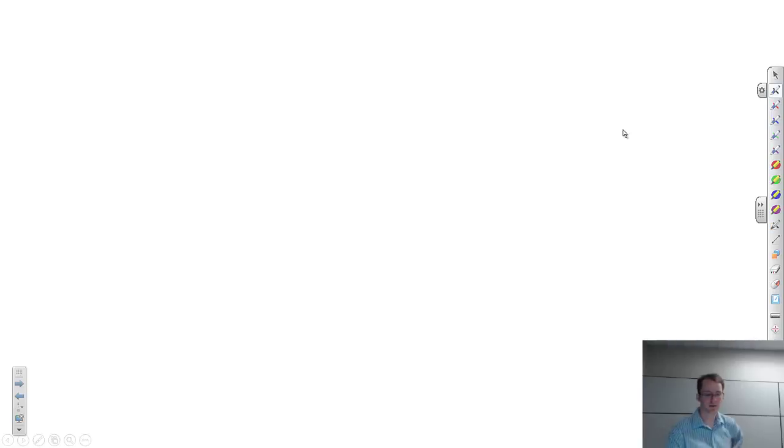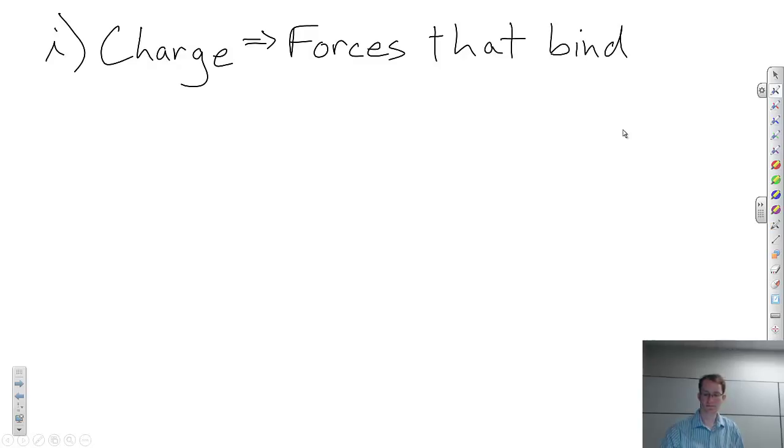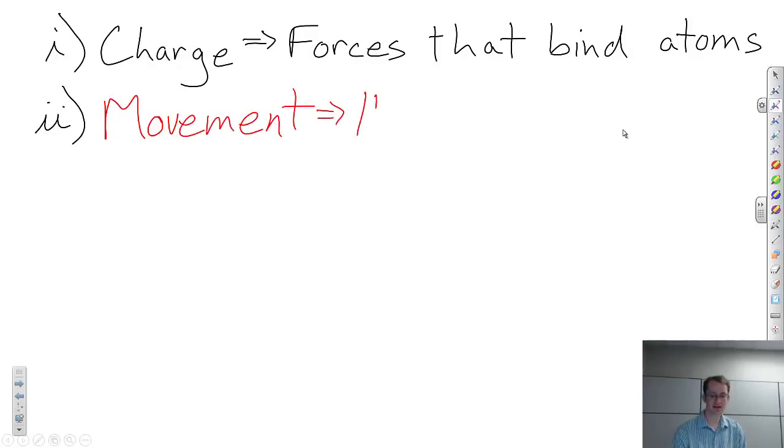So, we have charge that creates forces that bind the atoms together. It binds the electrons to the protons, essentially. Then, we have movement that is caused by heat. Movement of those electrons. Now, to describe the movement, we need to understand how the forces are pulling on the electron, and why they're bound, and how they move around the nucleus.